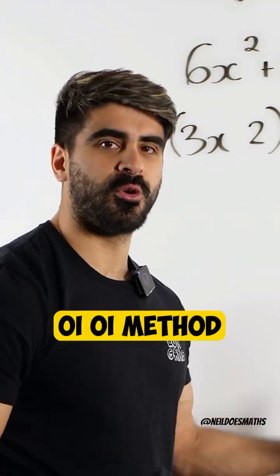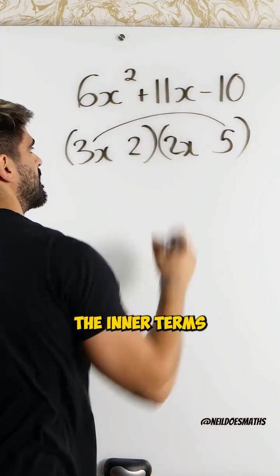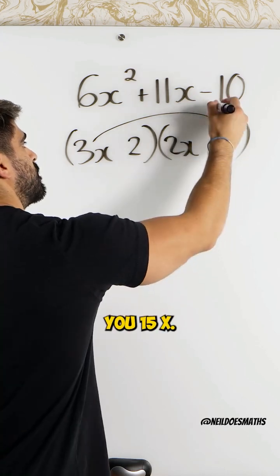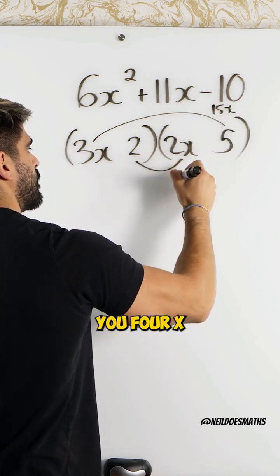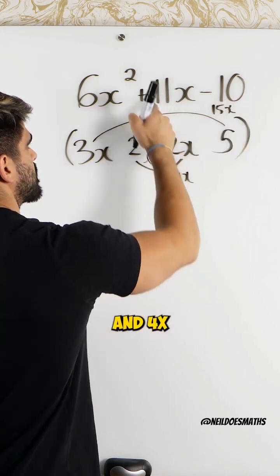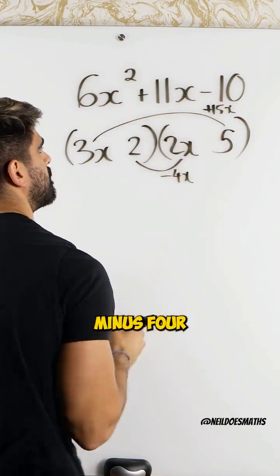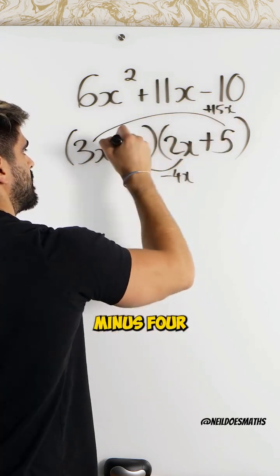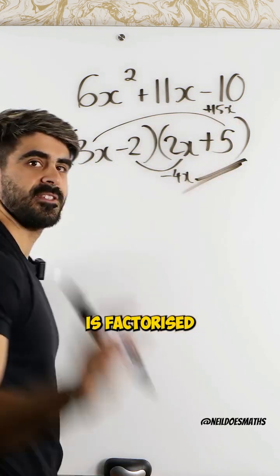This is called my OI OI method. We multiply the inner terms a bit like FOIL. 3x times 5 gives you 15x. This multiplies to give you 4x. How does 15x and 4x make 11x? If you have plus 15 minus 4. So, I need a plus 15 minus 4 and that is factorized.